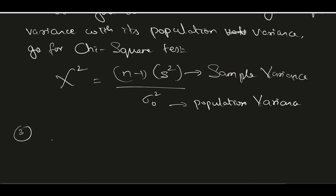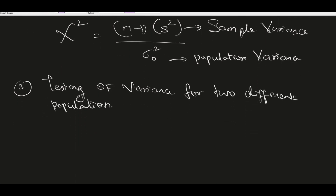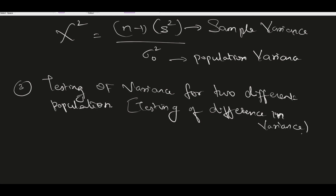The third one is testing the variance for two different populations. In other words, this is testing the difference in variance between two different populations. In that case, you are supposed to go for the F-test.